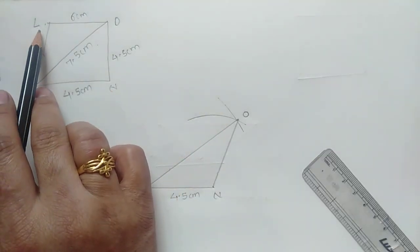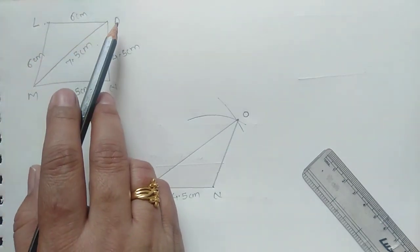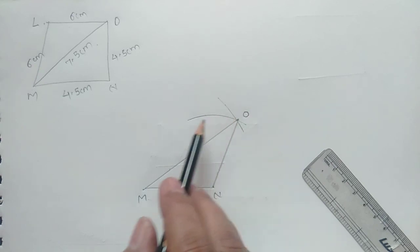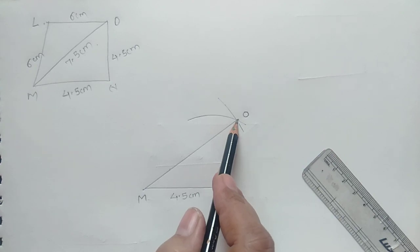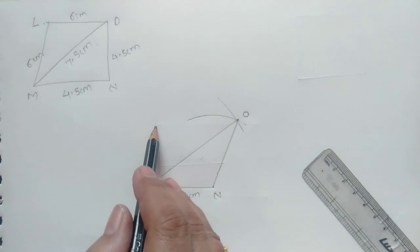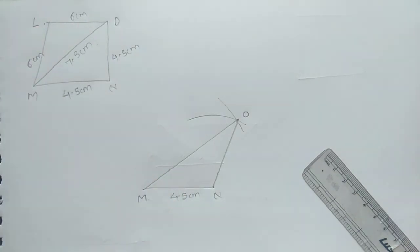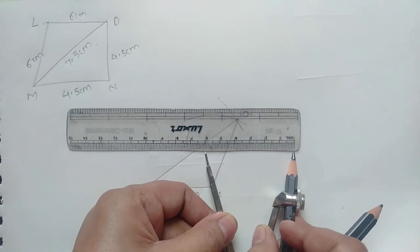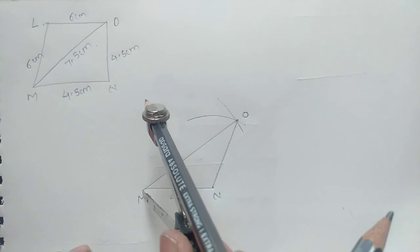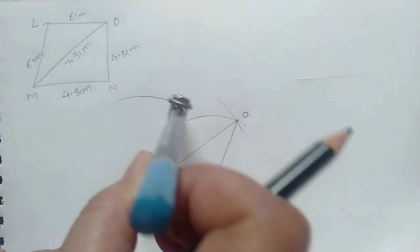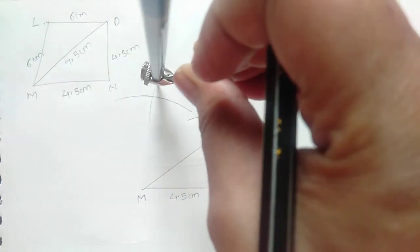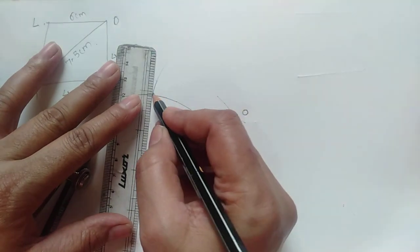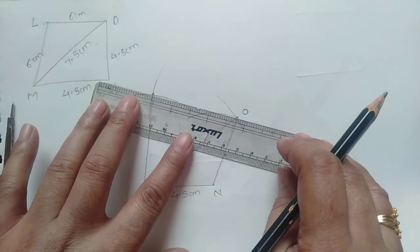Now to draw point L, take 6 cm distance in the compass and draw an arc from point M, then without changing the distance draw an arc from point O as well. The intersection of these arcs is point L. Measure 6 cm in the compass, draw the arc from M, then put the needle on O and draw the arc. Join the intersection point to vertex M and vertex O.